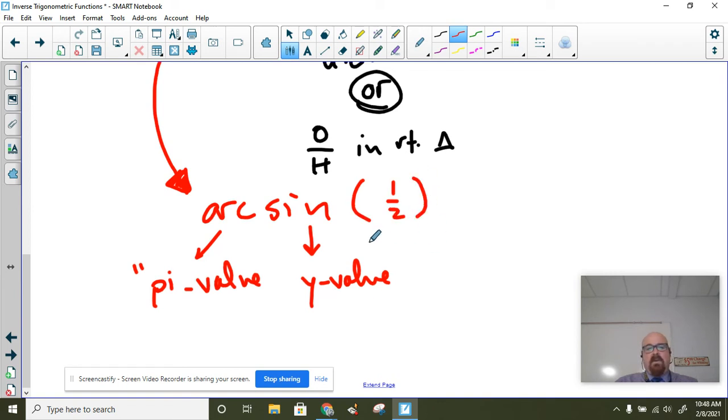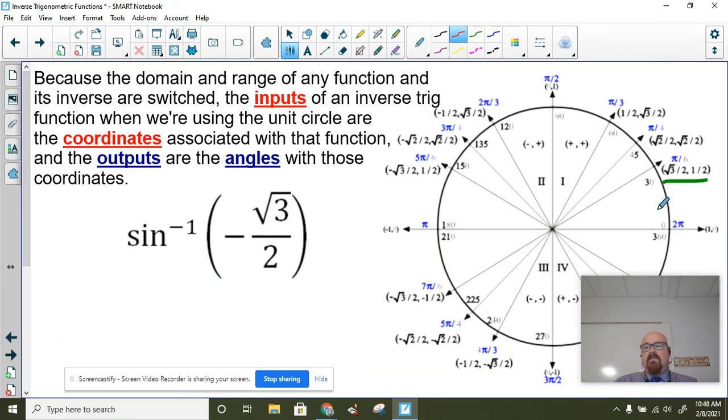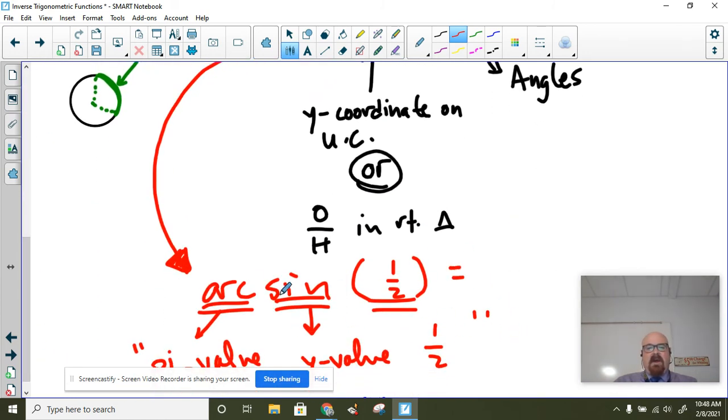So arc sine of, let's do a quick example: arc sine of one half. What pi value has a y value of one half? This is one of those numbers that we see as a y value on the unit circle. When you see arc sine one half, a different interpretation is what pi value has a y value of one half. Then go to the unit circle and find that y value of one half, which would be pi over six.